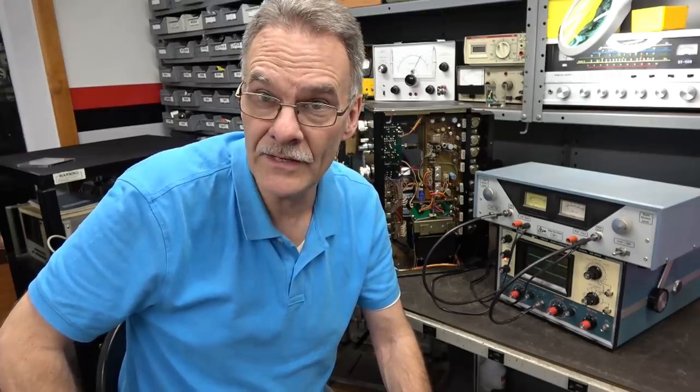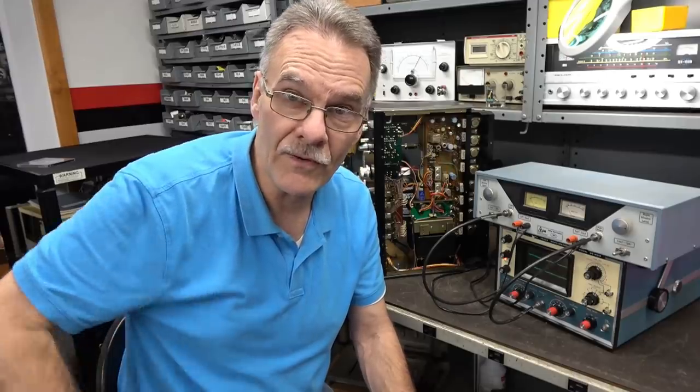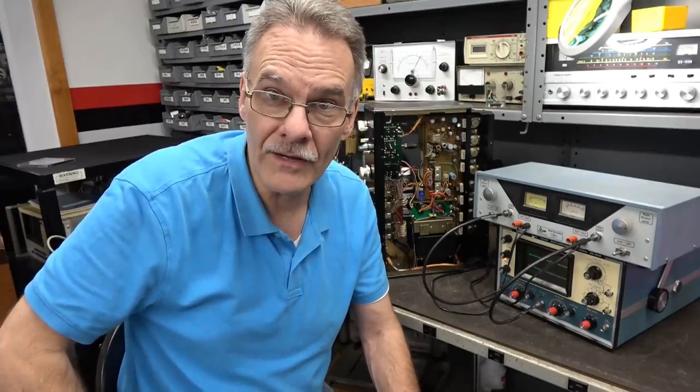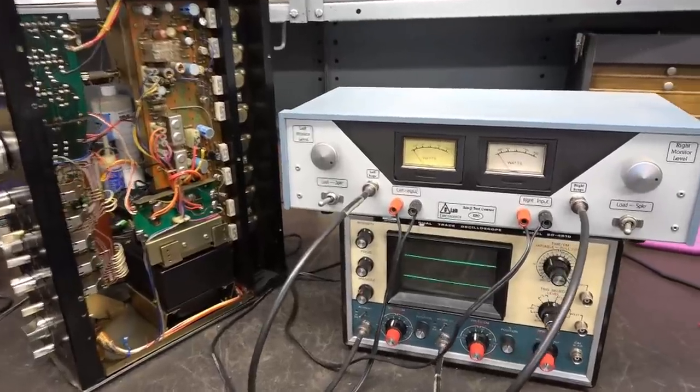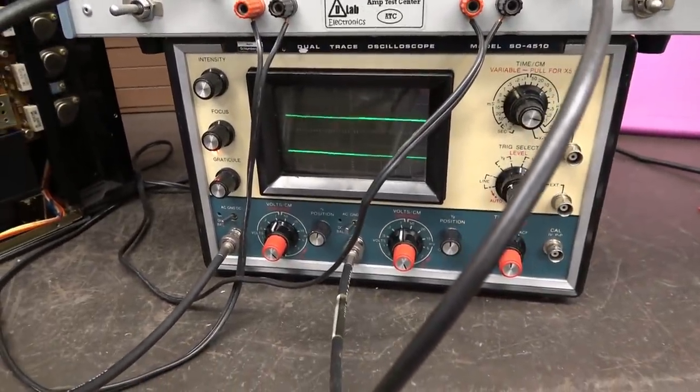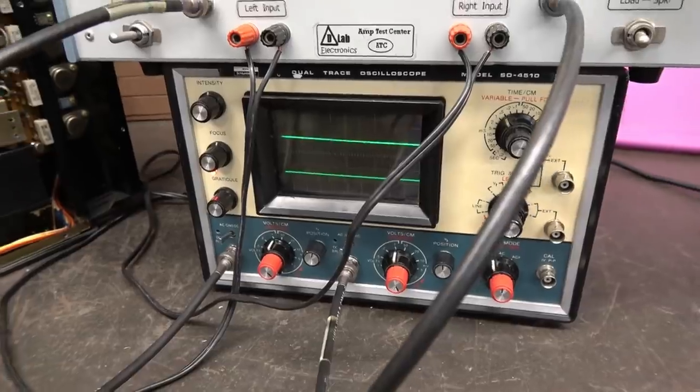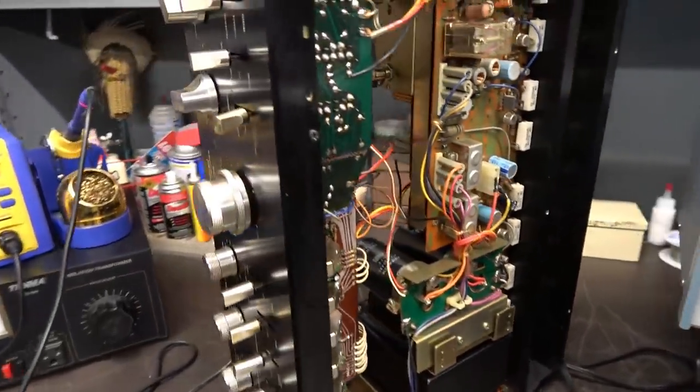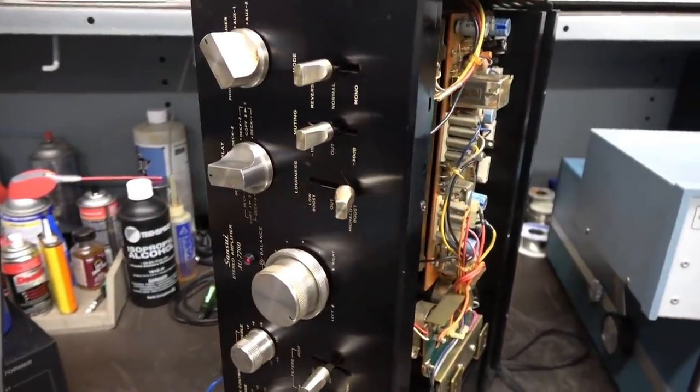I'm working on a Sansui AU-7700 amplifier. The complaint is after it plays for a little while, one channel goes kerbam and then it'll play normally. That's usually indication of a bad speaker relay or perhaps bad solder connections on the main amplifier board. Here's our test setup. I've got the D-Lab stereo audio test set and I'm using that old Heathkit scope.